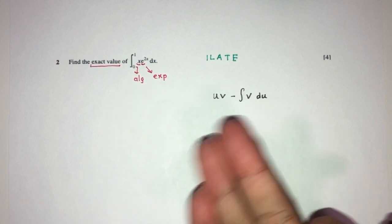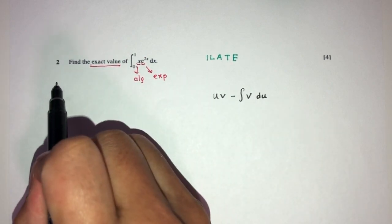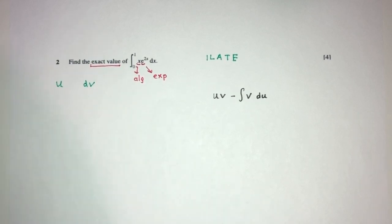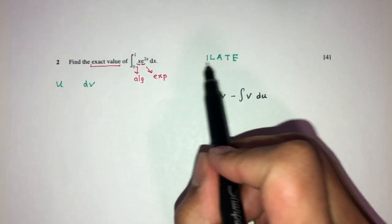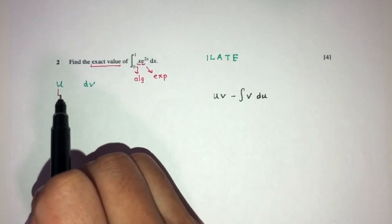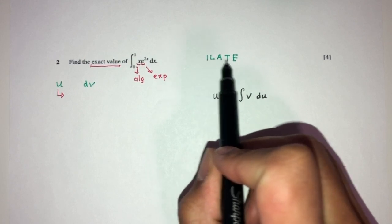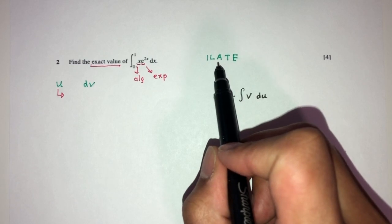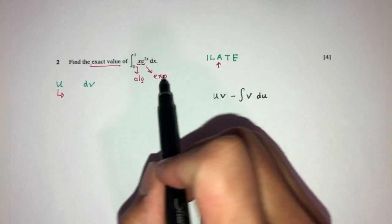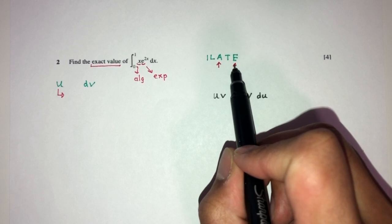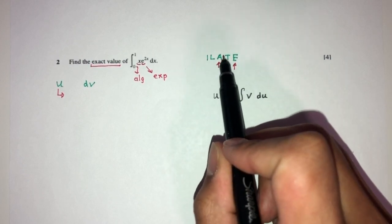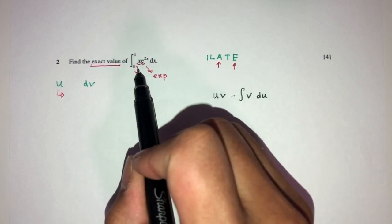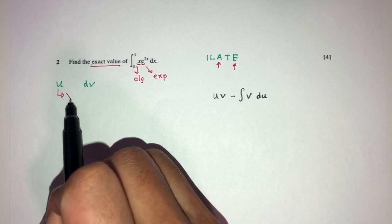To begin, I need to identify which part will be u and which will be dv. I follow the ILATE rule. Here I have an algebraic function (A) and an exponential function (E). In the ILATE order, A comes before E, so the algebraic function x will be my u, and e^(2x) will be dv.